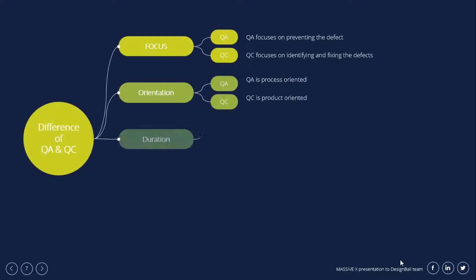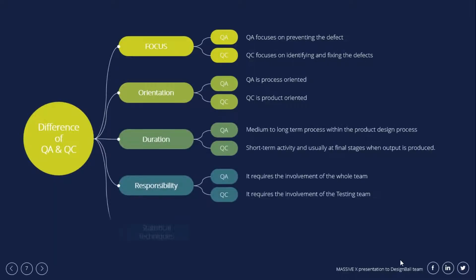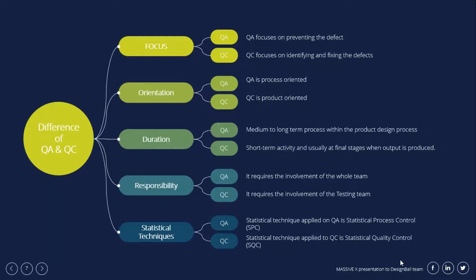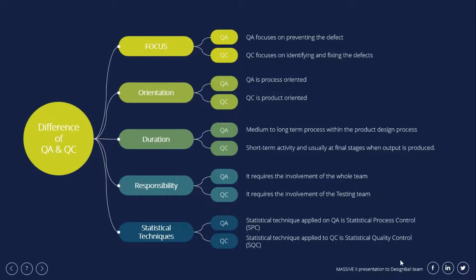Now let's look at the differences between quality assurance and quality control. The focus of quality assurance is on preventing defects, whereas the focus of quality control is on identifying and fixing those defects. In terms of orientation, quality assurance is process-oriented whereas quality control is product-oriented. In terms of duration, quality assurance is a medium to long-term process within the product design process, whereas quality control is a short-term activity that usually happens at the final stages when the output is produced.